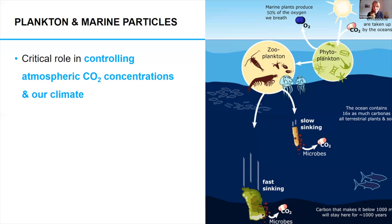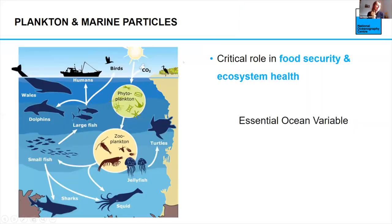It's not just that. Phytoplankton and plankton generally are also the base of the marine food web. Zooplankton are eaten by small fish, then by squid and large fish, going all the way up to birds and finally humans. They play a critical role in our food security and ecosystem health overall, which has led to plankton being officially considered an essential ocean variable.